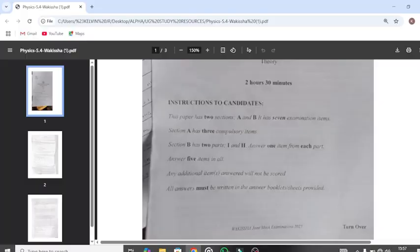I want to go through direct to the instructions. As you can see, this paper has two sections, A and B. It has seven examination items. Section A has three compulsory items and Section B has two parts: Part 1 and Part 2. You have to answer one. You can go through the instructions.